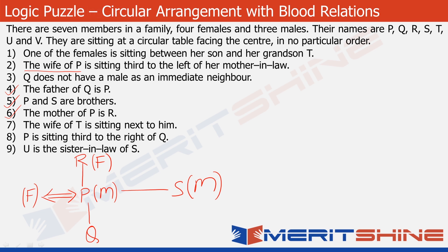Statement one mentions a grandson T, and statement seven tells us that T is also married since he has a wife. So T and his wife form a couple. We now have five members in the family tree and these two are to be adjusted. Looking at the family tree carefully, the only position possible for the couple T and his wife would be at the bottom of the tree, parallel to Q. So that's T — a male — married to a female whose name we haven't figured out yet.